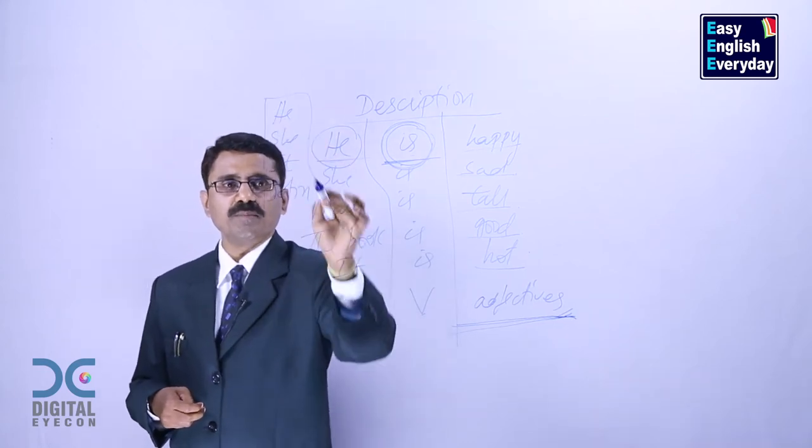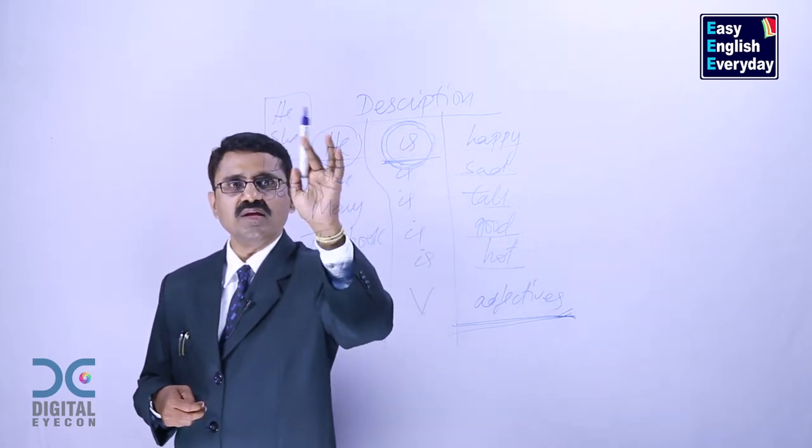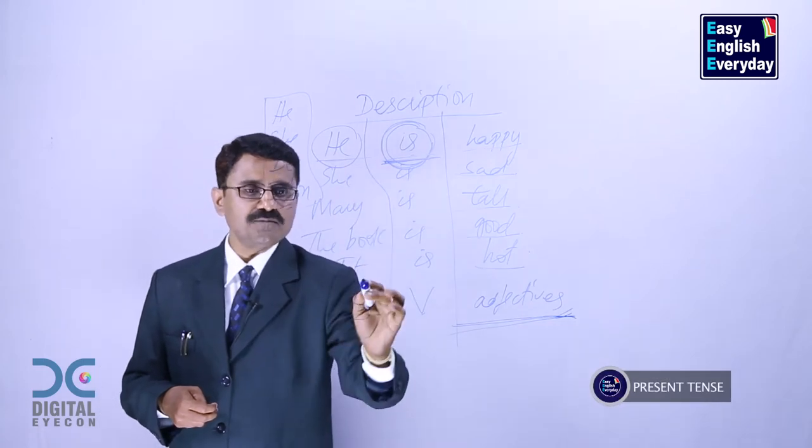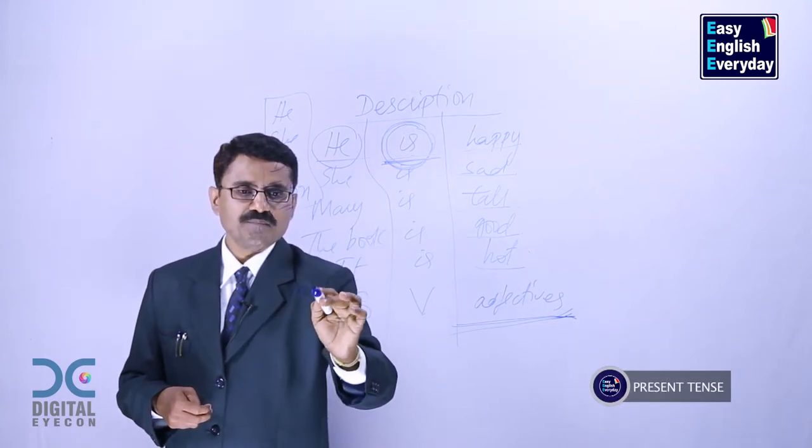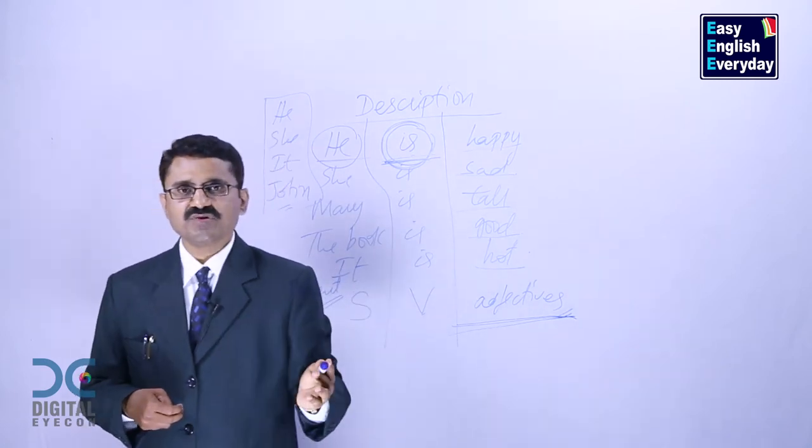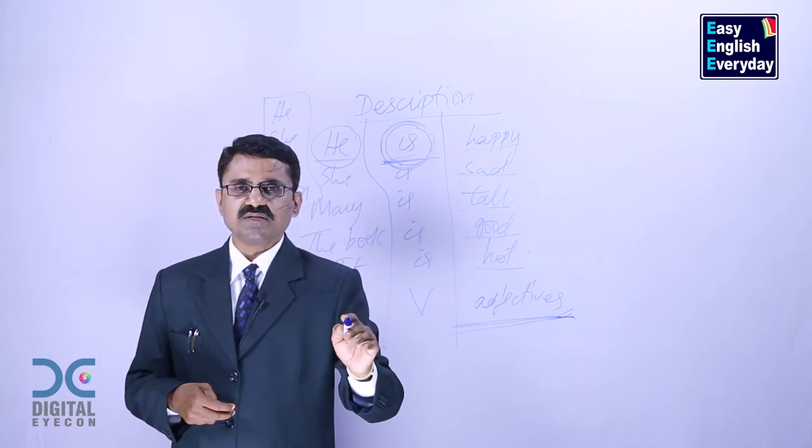Except these four people, nobody can use 'is'. It goes only with he, she, it or any singular name. And it is used for present tense. You can't use it to talk about past tense or future tense or any other tense. It is used only for present tense.